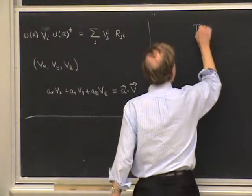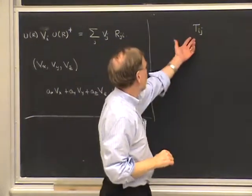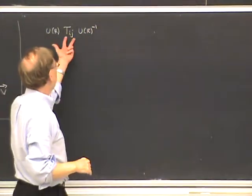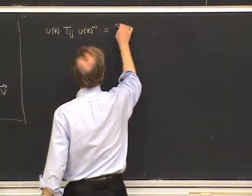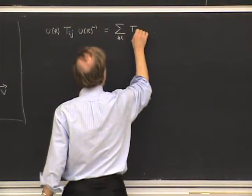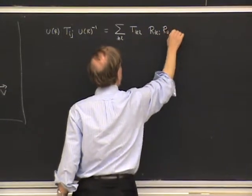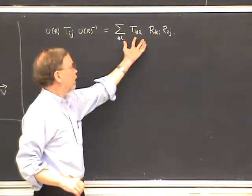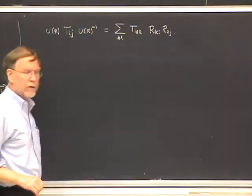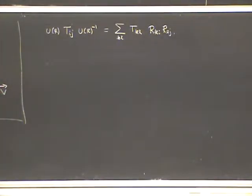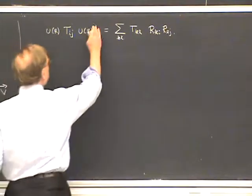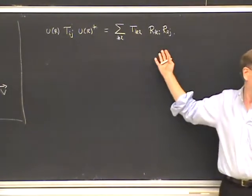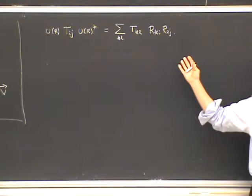What about a tensor operator T_{ij}? It has nine operators and the transformation law under conjugation by rotations gives a sum over K,L of T_{KL} times R_{Ki} times R_{Lj}. So we have a nine-dimensional space of operators that is invariant under rotations because rotating any component gives a linear combination of the same operators. The question is whether it is reducible or irreducible. Unlike the scalar and vector operators, the space of second-rank tensor operators is actually reducible.